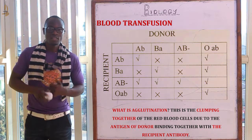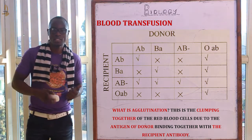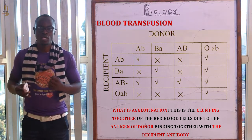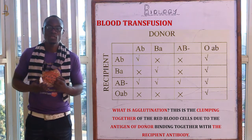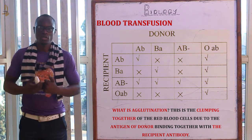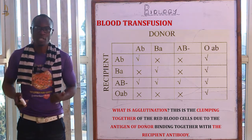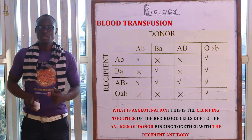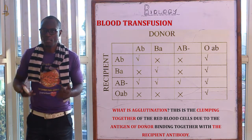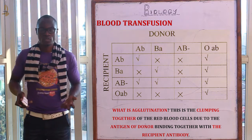Agglutination is the clamping together of red blood cells due to the antigen of the donor binding with the antibody of the recipient. The cells come together and stick, as if glue has been applied. Blood group O is referred to as the universal donor and can donate blood to all other blood groups because it does not have any antigen — either antigen A or antigen B — that may cause agglutination.